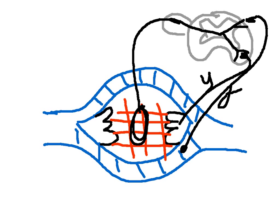To review the reflex: you're given a load, which stretches the extrafusal fibers, increasing tension and stretching the muscle spindle. The muscle spindle fires via the afferent neuron, synapsing onto the alpha motor neuron — which innervates the extrafusal fibers — and the gamma motor neuron — which innervates the intrafusal fibers — causing the muscle to contract and bring the arm back to its original position.